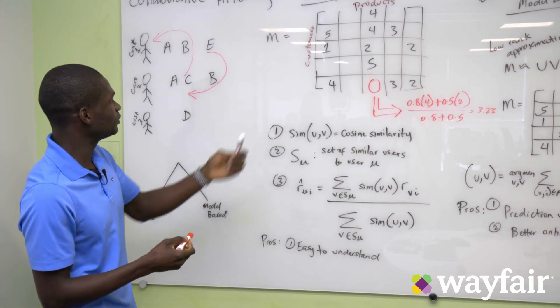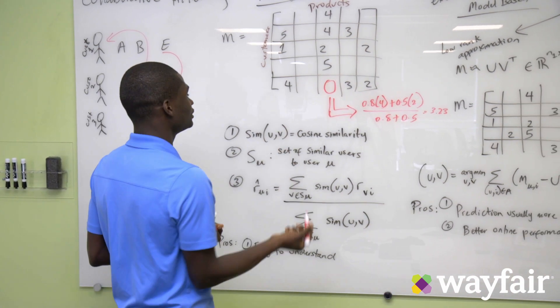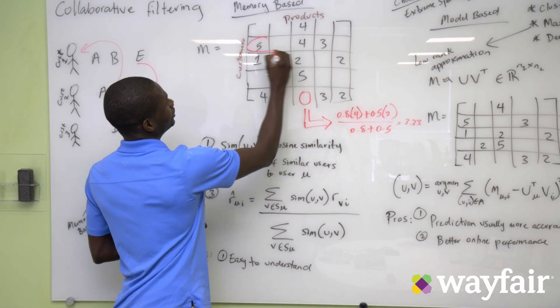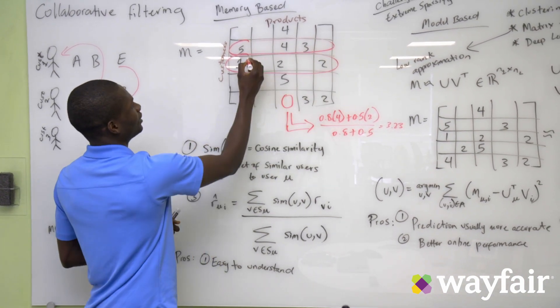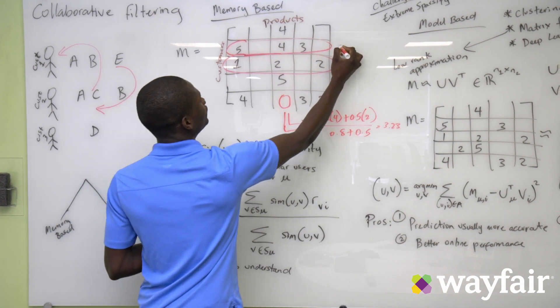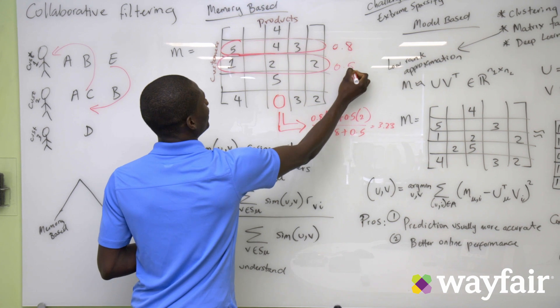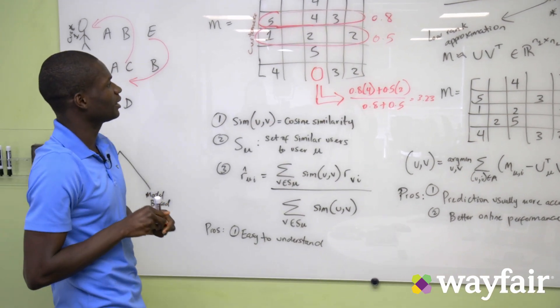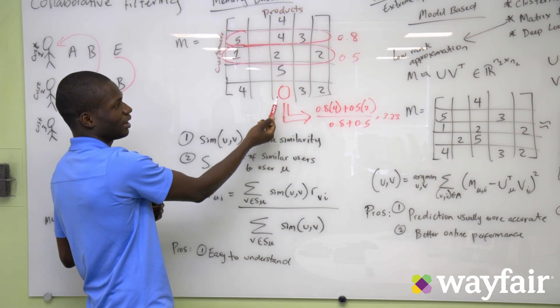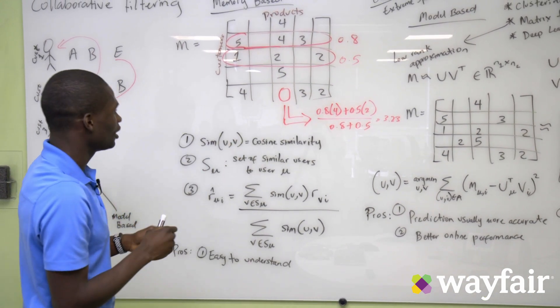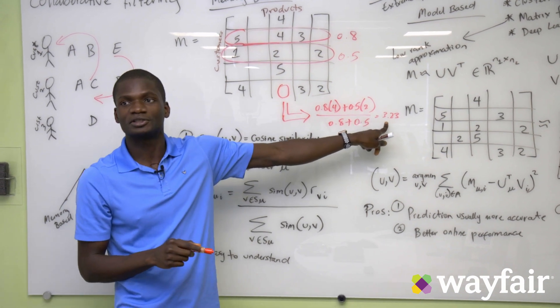And for this particular example, the top two most similar users to this user is this user and this user. And they both have values of 0.8 cosine similarity and 0.5. So if we want to make a recommendation or prediction concerning what this user would rate this item, we could take a weighted average, and then we come up with the final prediction of 3.23.